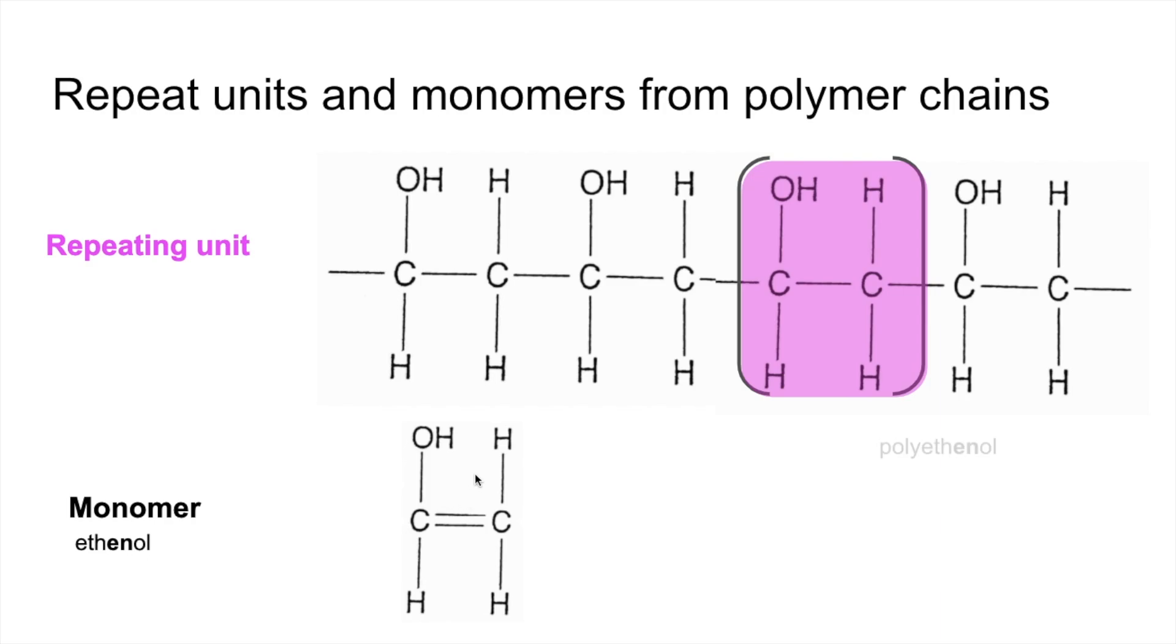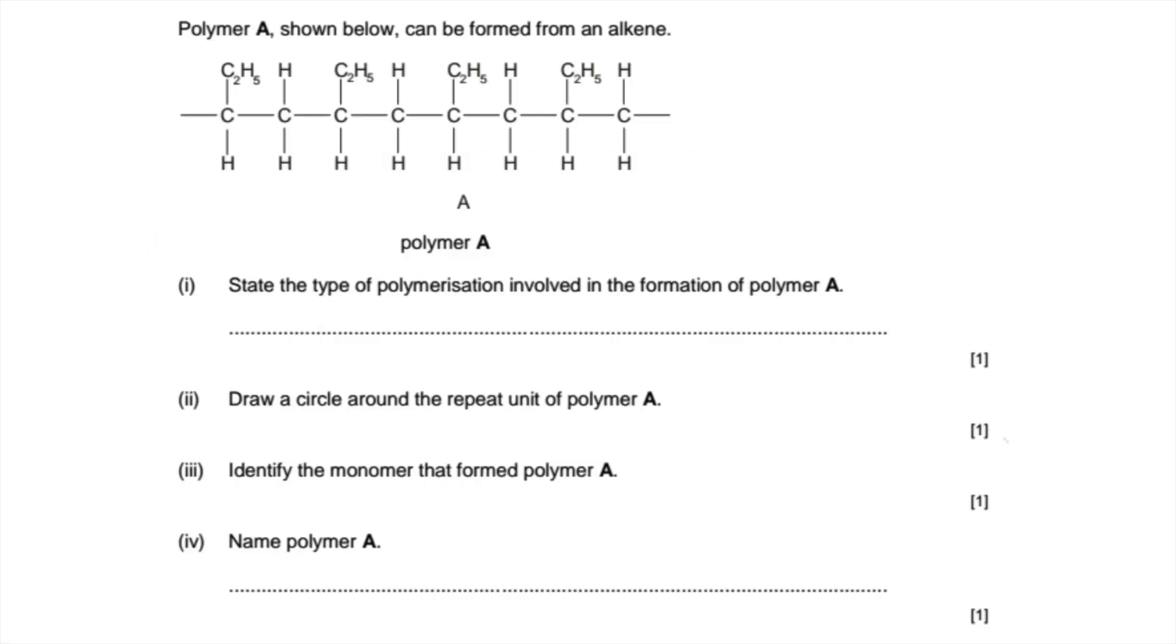So the polymer would be called polyethenol. We'll finish this section with a couple of exam questions, typical exam questions on addition polymerization. I've just answered the first one there. The type of polymerization is addition polymerization. Draw a circle around the repeat unit—that's identical to what we've just done, so any of those would do. Identify the monomer that forms polymer A. Remember, we lose the end bonds and put the double bond back, so we get that.